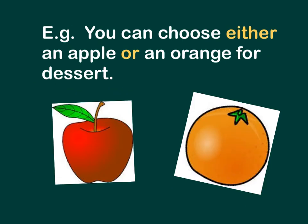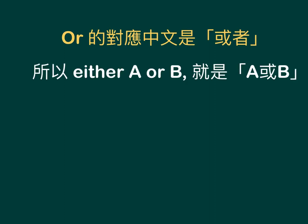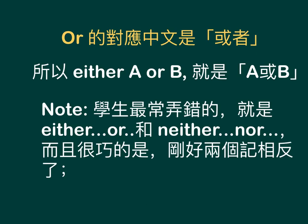For example: You can choose either an apple or an orange for dessert. The word 'or' corresponds to 或者 (or), so either A or B means A or B. Note: students most commonly confuse either/or and neither/nor, sometimes mixing the two up by mistake.